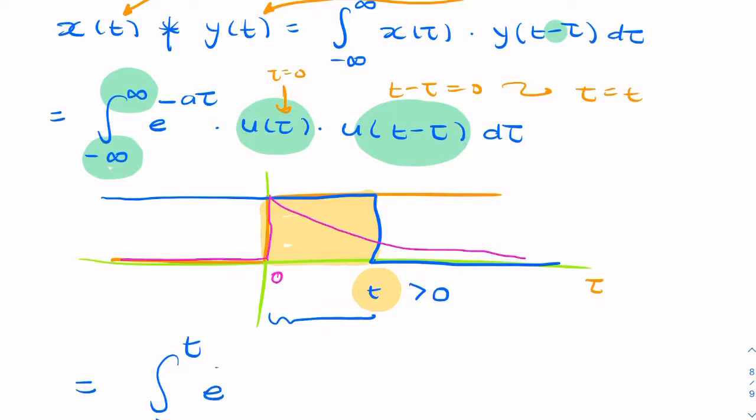So it's e to the power minus a tau d tau. So the answer is minus one over a, e to the minus a tau from zero to t.